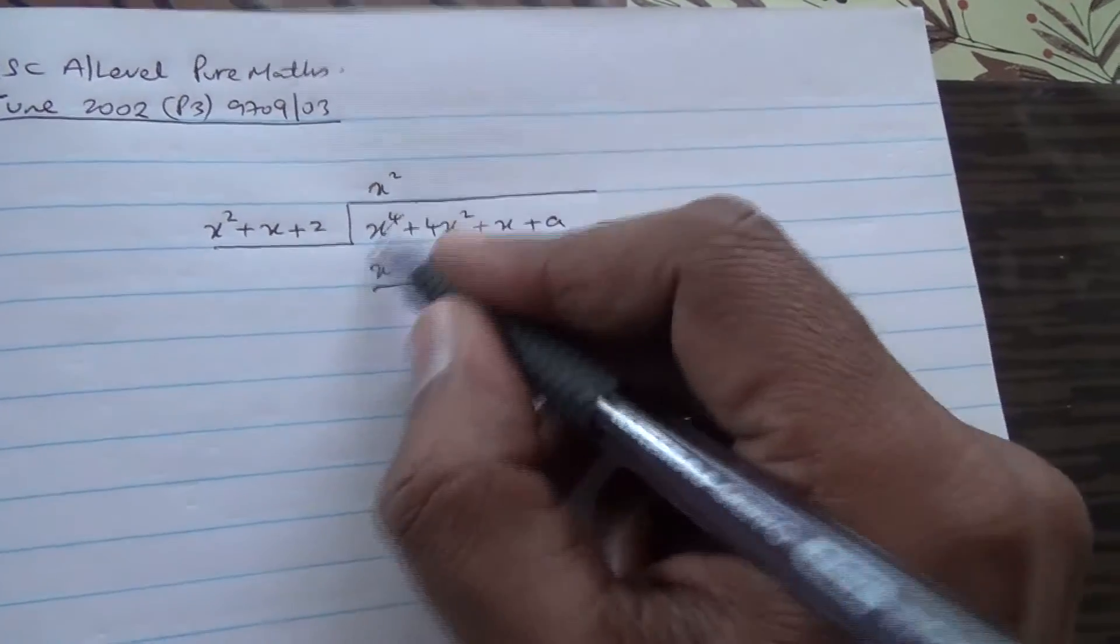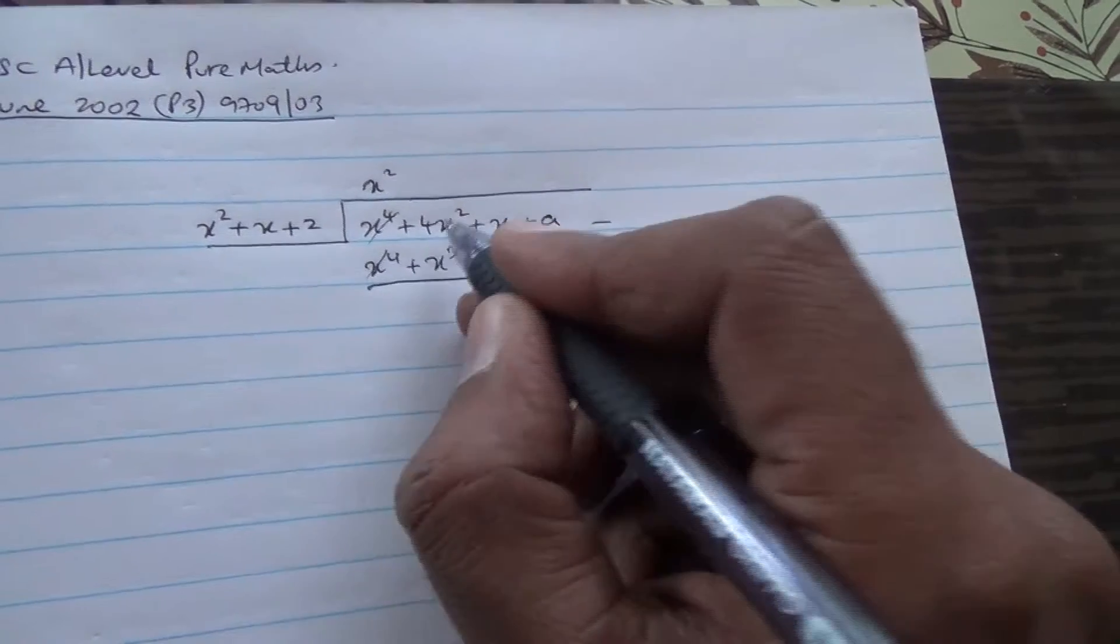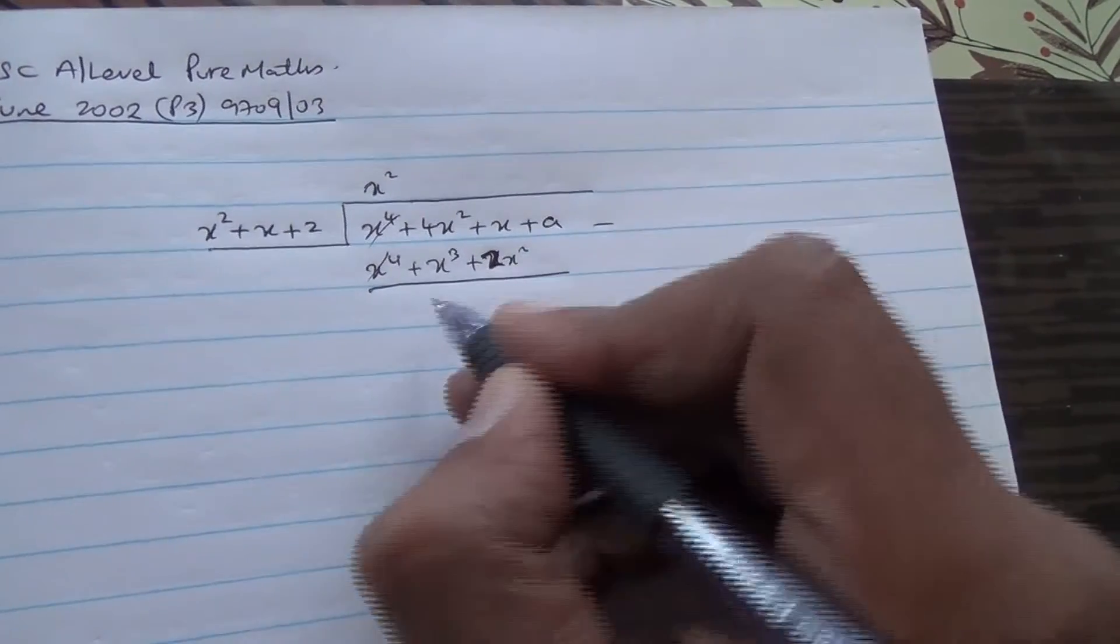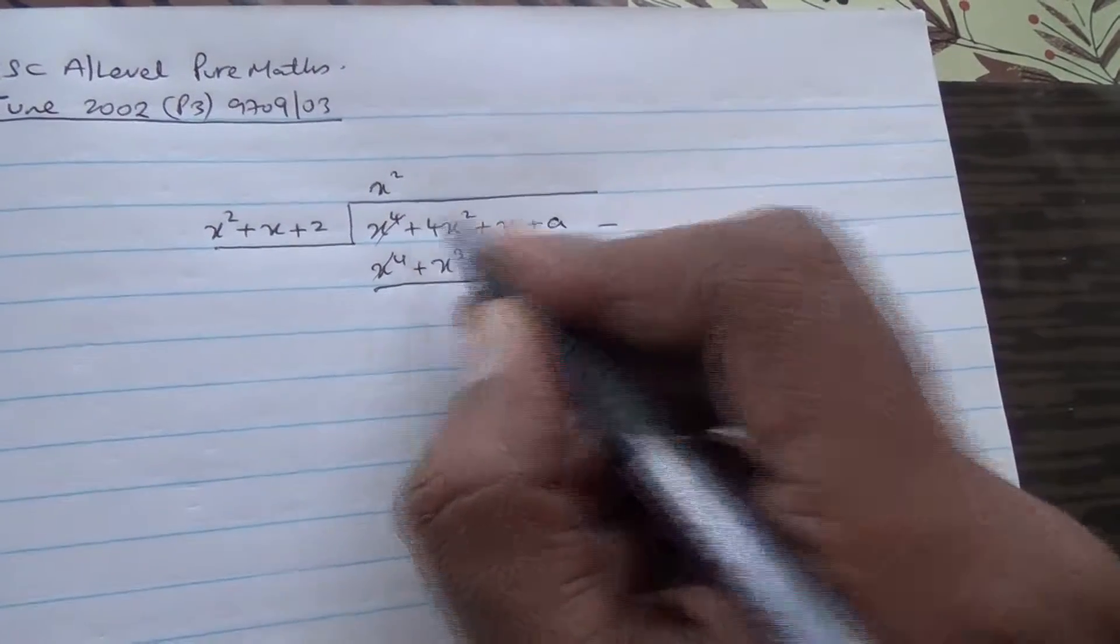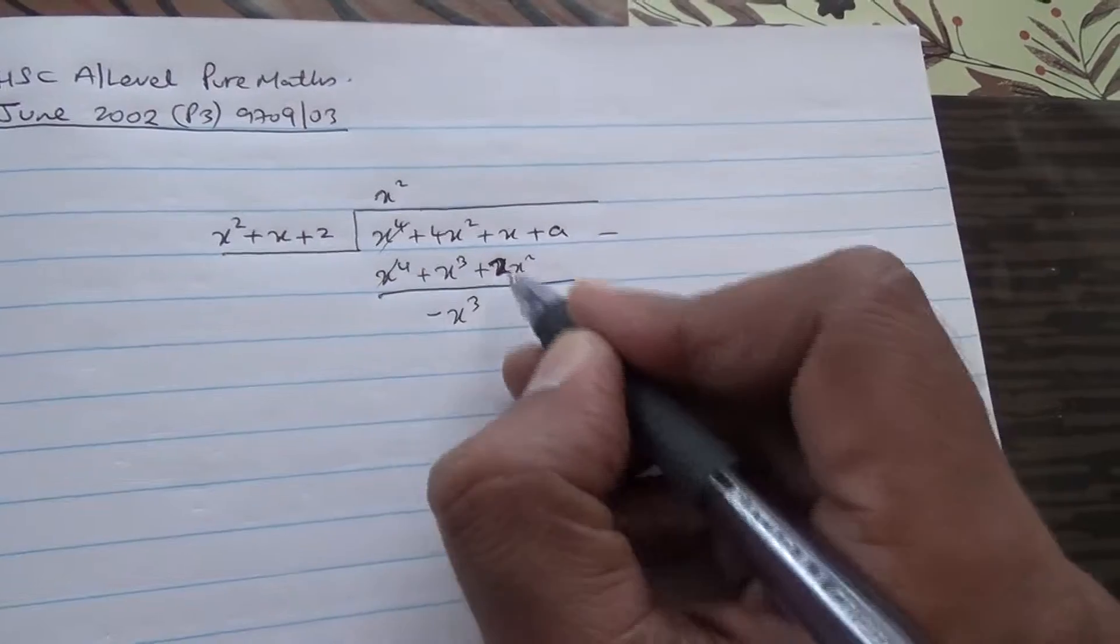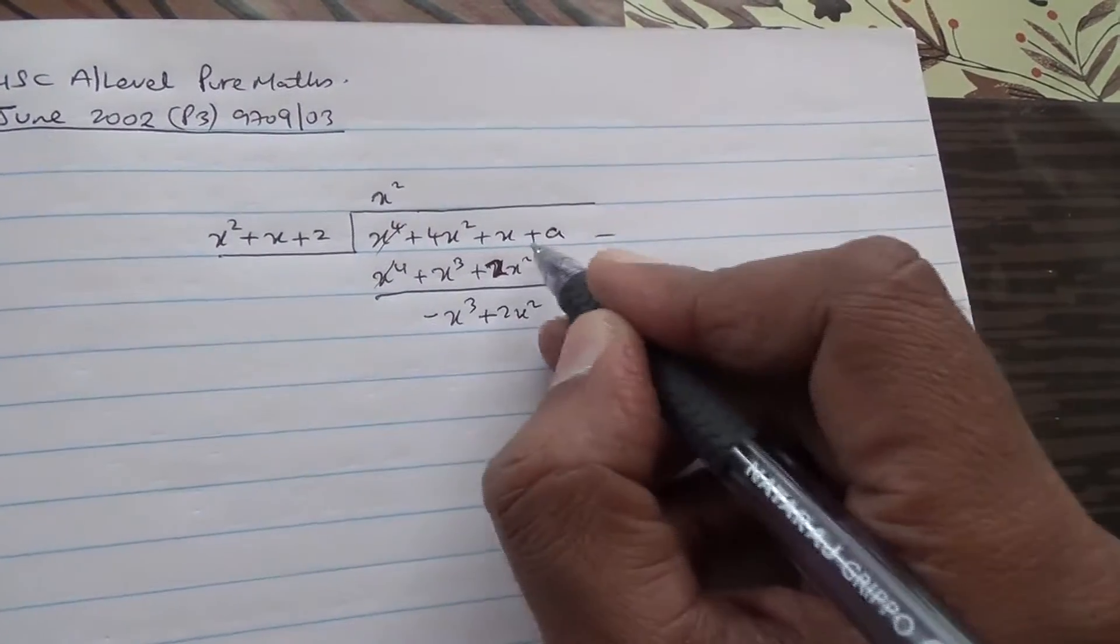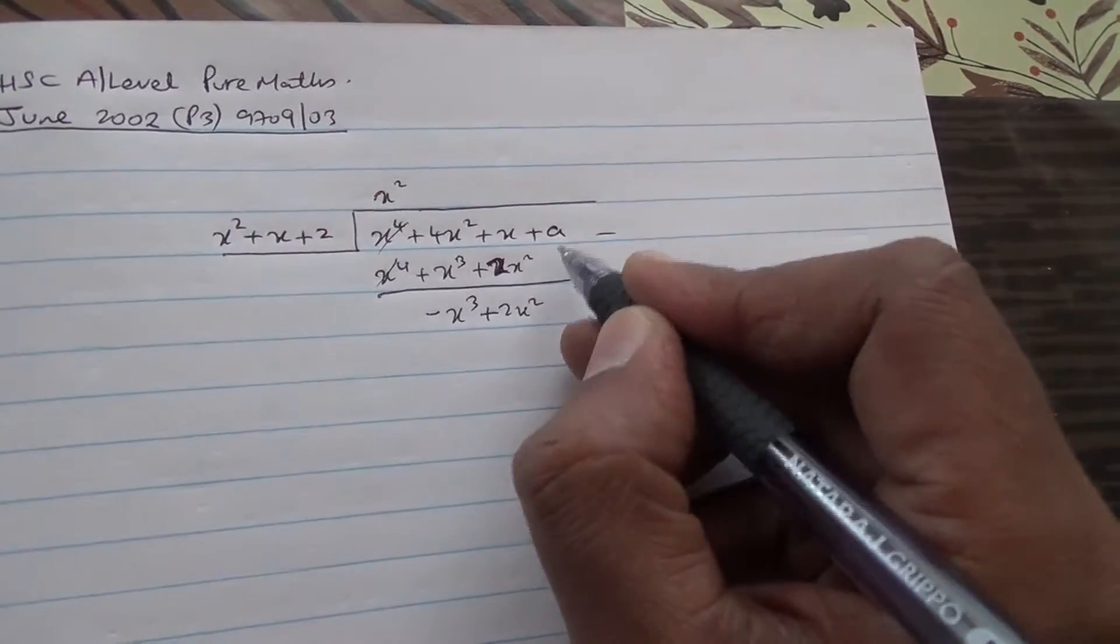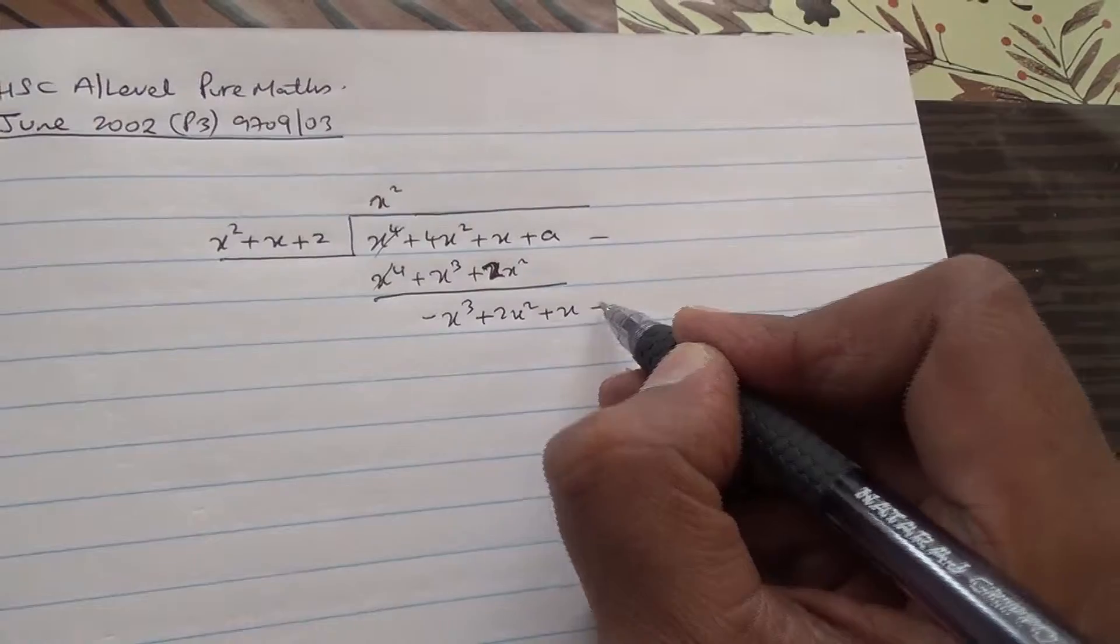This one cancels out. 4x squared minus 2x squared is 2x squared. And there's no x cube here, so 0x cubed minus x cube is minus x cube. 4x squared minus 2x squared is plus 2x squared. x minus nothing again is x. A minus nothing is a.